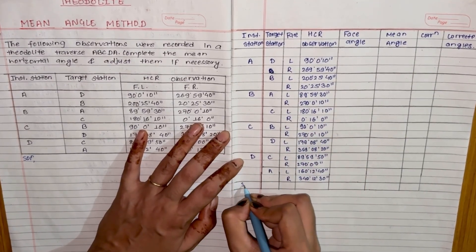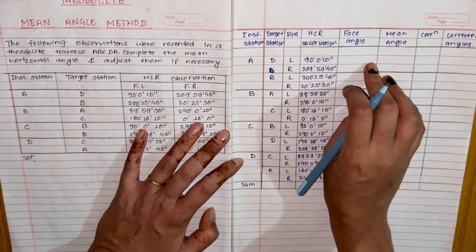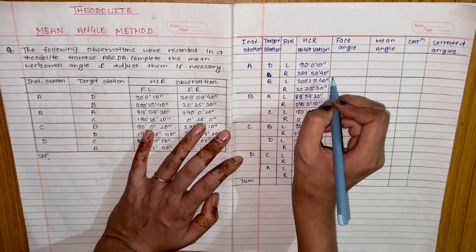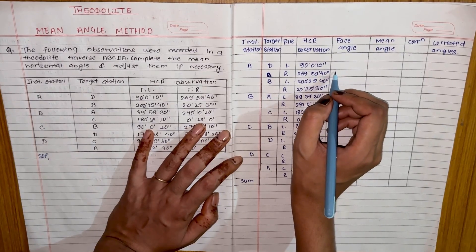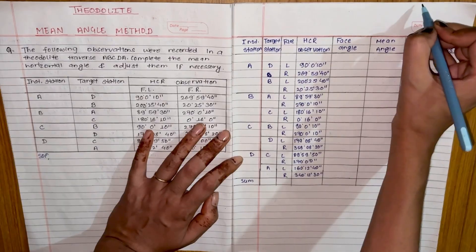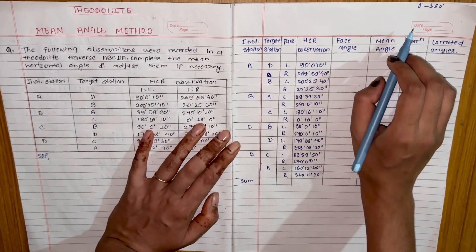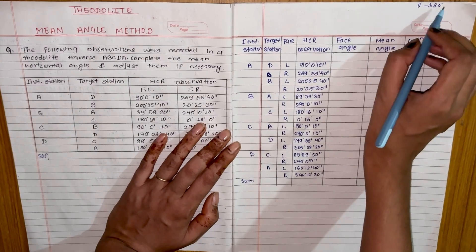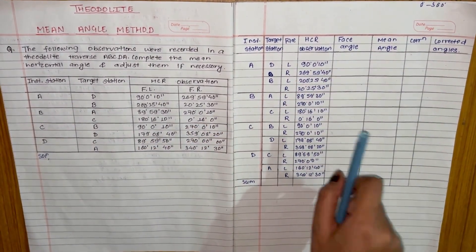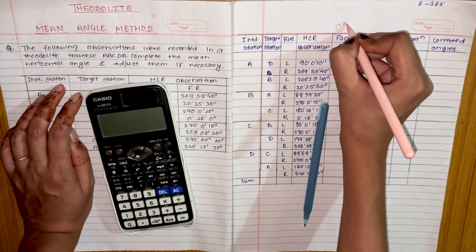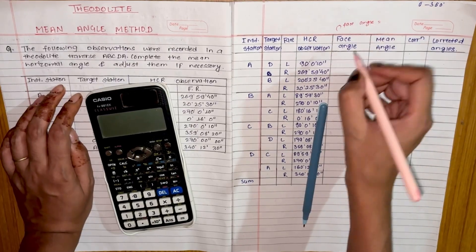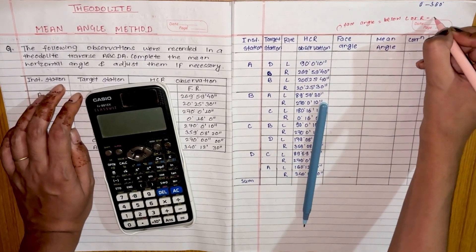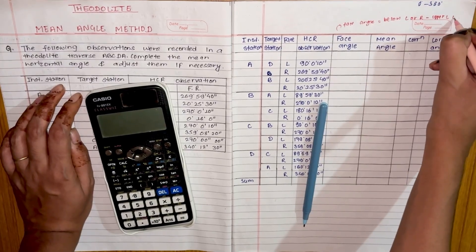Now we will calculate the face angle. The face angle is: left angle of B minus left angle of D, and right angle of B minus right angle of D. If the calculation comes out negative, we will add 360° since the reading lies between 0° to 360° in the horizontal circular reading. So the face angle equals the lower reading minus the upper reading.